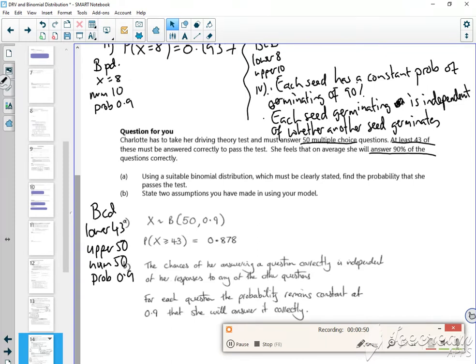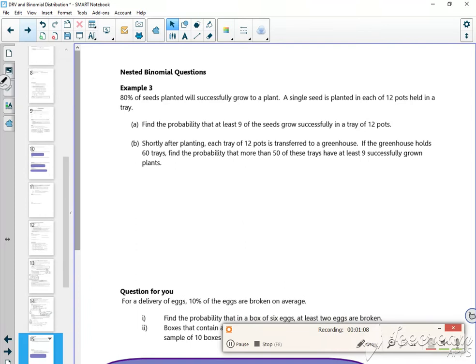We've got an independent one. I'd write that as answering correctly is independent of the answers to any other questions. And for each question, the probability remains constant. That's good, right, let's keep going then.